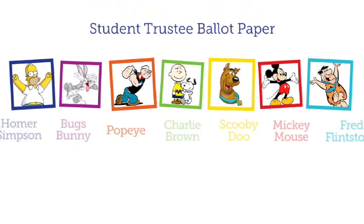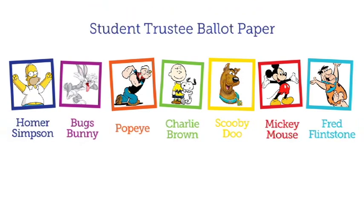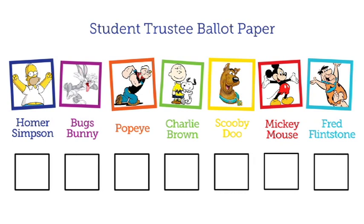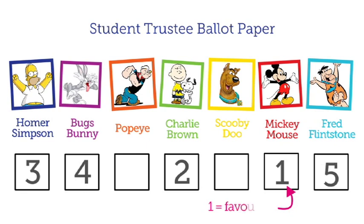Let's say these seven cartoon characters are all running for student trustees. For the voter, it's very simple. All you need to do is rank your favourite candidates in order of preference, just like in alternative voting. The important thing to remember about the student trustee election is that four of the candidates will be elected, not just one, as with the sabbaticals.